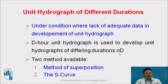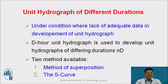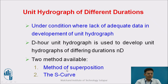For example, if we have a 2-hour unit hydrograph, we can derive a 6-hour unit hydrograph (3 times D). There are 2 methods available: the first method is the method of superposition, and the second method is the S-curve method. In this presentation, we will be dealing with the method of superposition.